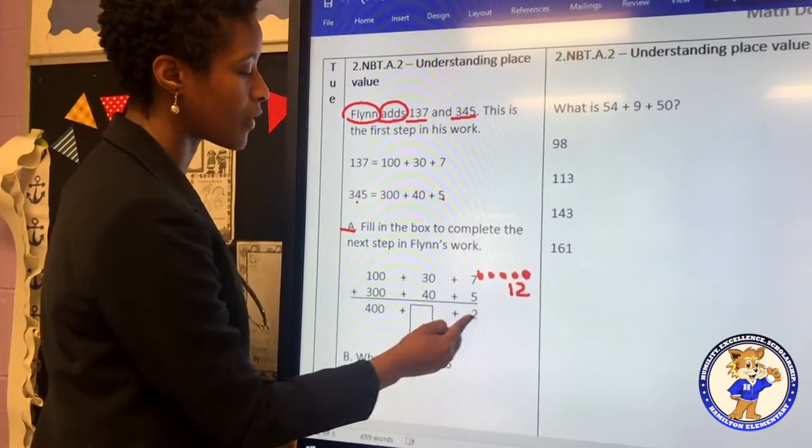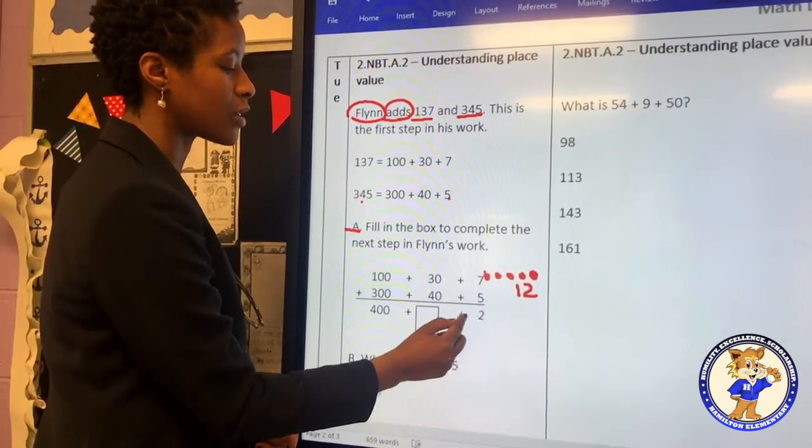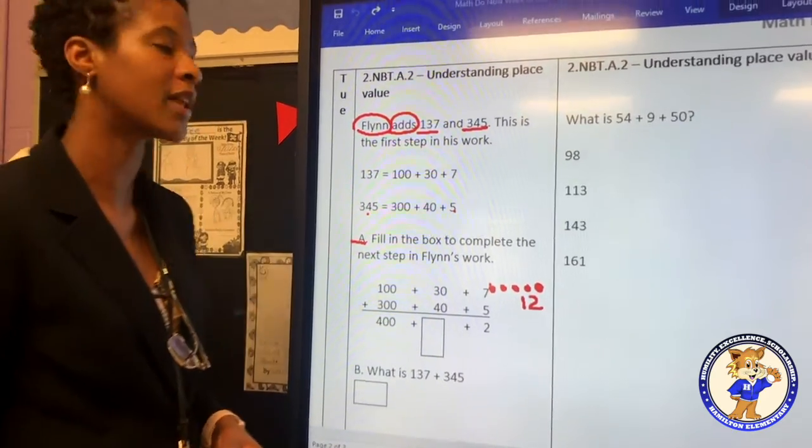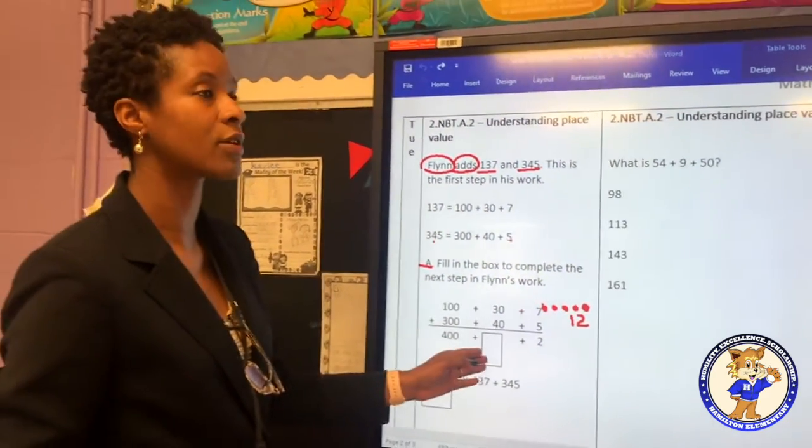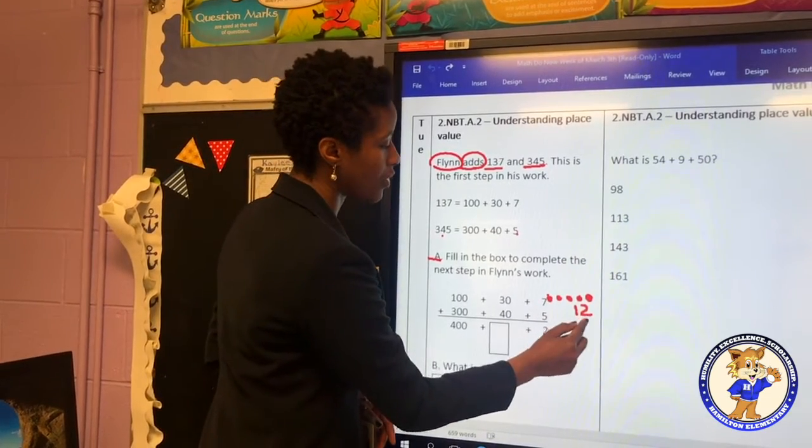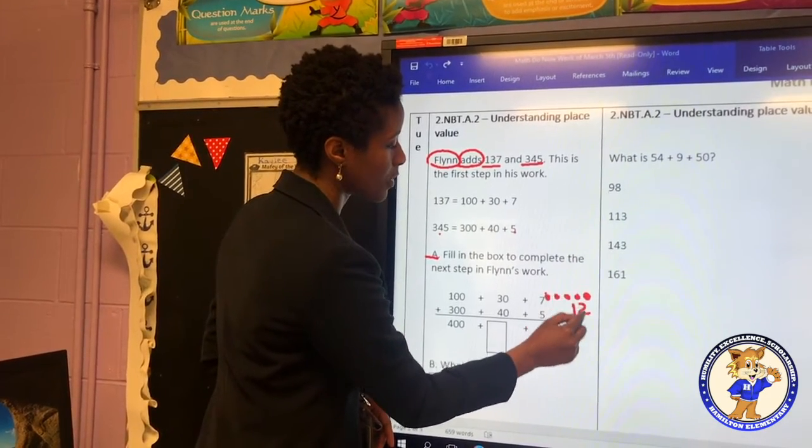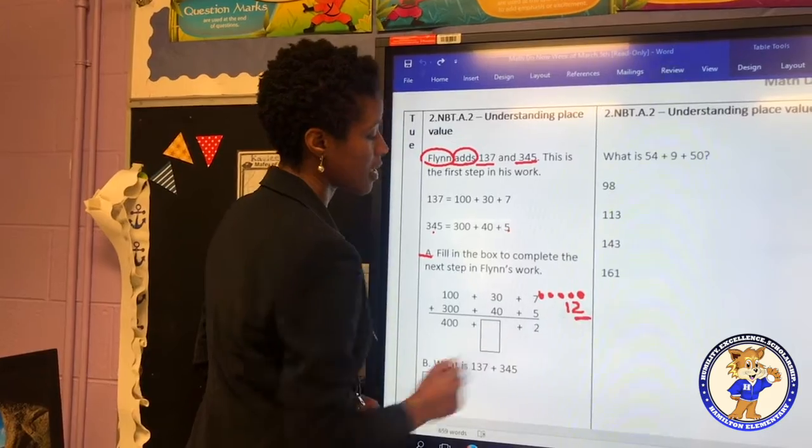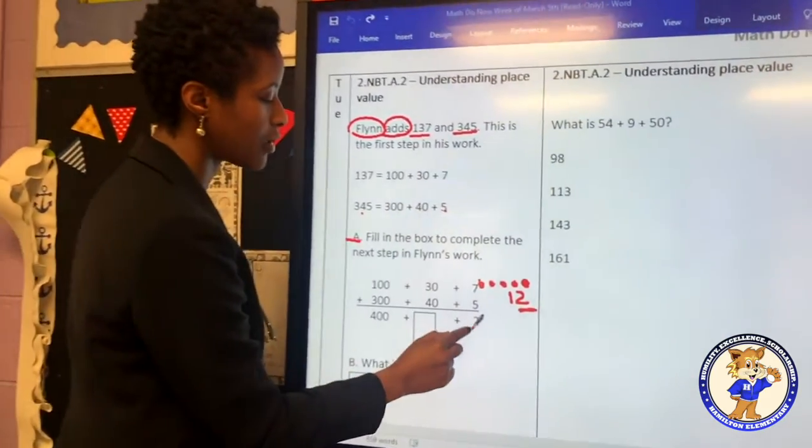But I know, and Flynn understands, that you cannot just put the number 12 here in this ones place because we are also adding tens and hundreds. Therefore, Flynn has brought the number that's in the ones place, this number 2. He has taken that number and put it underneath the ones column here.